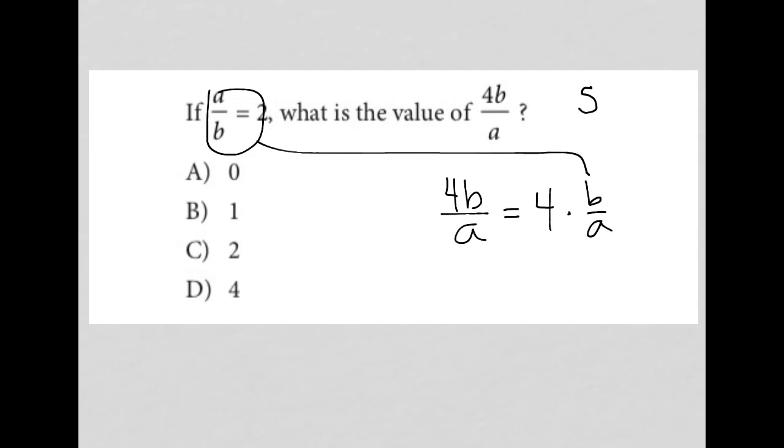So if A over B is 2, then what's B over A? So A over B is a fraction. 2 also can be written as a fraction, which would be A over B equals 2 over 1. B over A is just the inversion of that fraction or the reciprocal of that fraction. So if A over B is 2 over 1, then B over A should therefore equal 1 over 2.